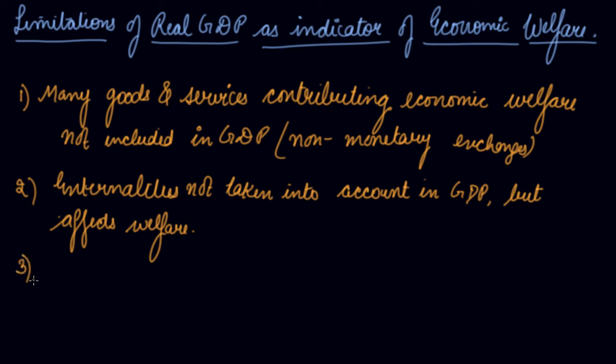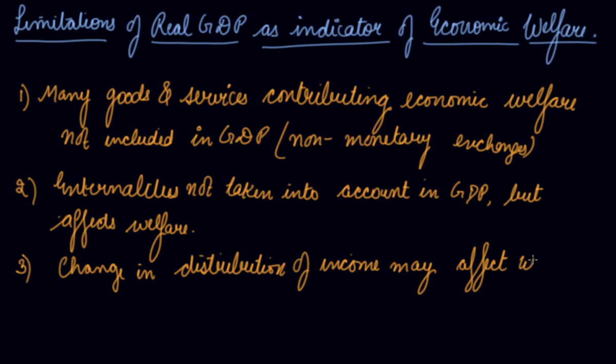Change in distribution of income may affect welfare. If with every increase in the level of GDP, distribution of GDP is getting more unequal, then there is no welfare of the society. The society's welfare is when there is equalized income in the economy. But with the increase in the GDP, if the distribution of income is increasing more, that is rich are becoming more richer and poor are becoming more poorer, then in that case this is not the actual sign of the welfare in the society.